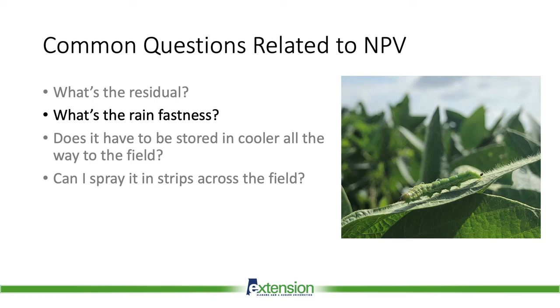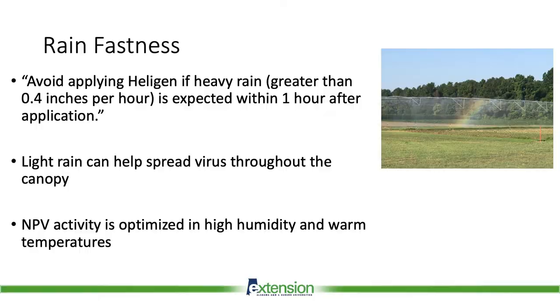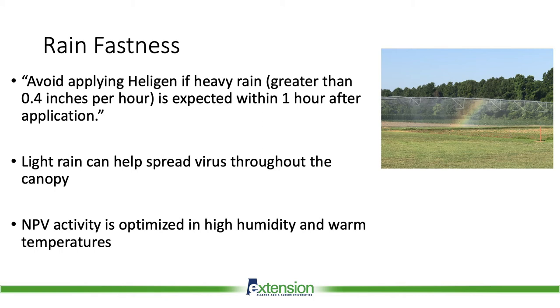Another question is on rain fastness. For this product, we basically need it to dry on the leaf. On the label for Helogen, it states to avoid applying Helogen if heavy rain — which they deem greater than 0.4 inches per hour — is expected within one hour after application. It's very important that we get it dry on the leaf before a heavy rain. We want the podworms to be actively feeding at the time of application, and a light rain can even help spread the virus to the lower parts of the canopy where it's a little harder to get penetration. MPV is also much more effective in high humidity and warm temperatures, so a light rain can actually help efficacy.